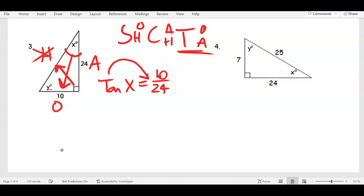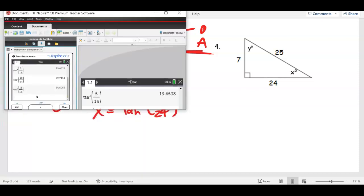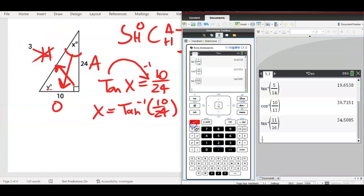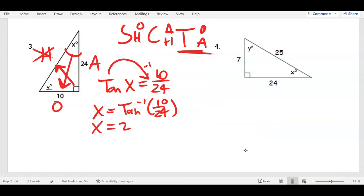And again, move the trig over with an inverse. So, X equals tan inverse. And I got 22.619 makes the one go up. 22.62 degrees. So, right here.